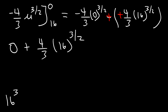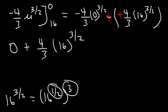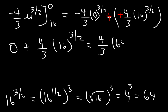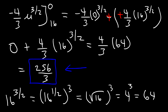To evaluate 16 raised to 3 over 2: this equals 16 to the one half, then raised to the 3rd. 16 to the one half is the square root of 16, which is 4. And 4 to the 3rd is 64. So we have 4 over 3 times 64. 4 times 64: 4 times 60 is 240, 4 times 4 is 16, so 240 plus 16 is 256. The final answer is 256 divided by 3.